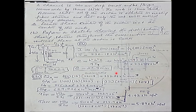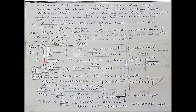Substituting into the formula with I = 236.18 × 10⁶ mm⁴, the shear center e comes out to be 29.5 millimeters. For Part B, we need to sketch the shear stress distribution when the vertical shear force at the section is 50 kN.